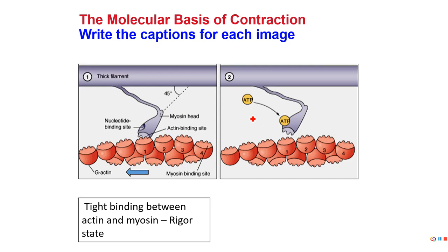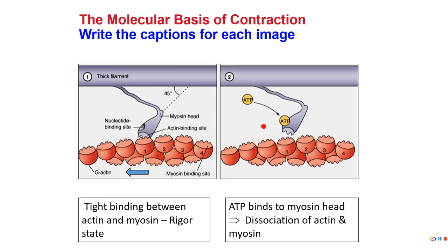When someone has died, they experience rigor mortis shortly after. What has happened is that actin and myosin are tightly bound, and the reason for that is there's no more available ATP. When ATP binds to myosin in the tightly bound state, it causes actin and myosin to break apart.